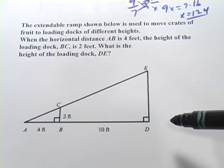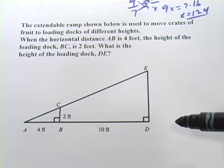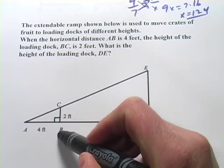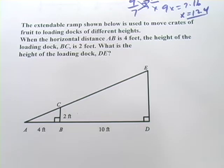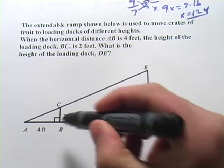Is used to move crates of fruit to loading docks of different heights. When the horizontal distance AB so from here to here is four feet the height of the loading dock BC is two feet.